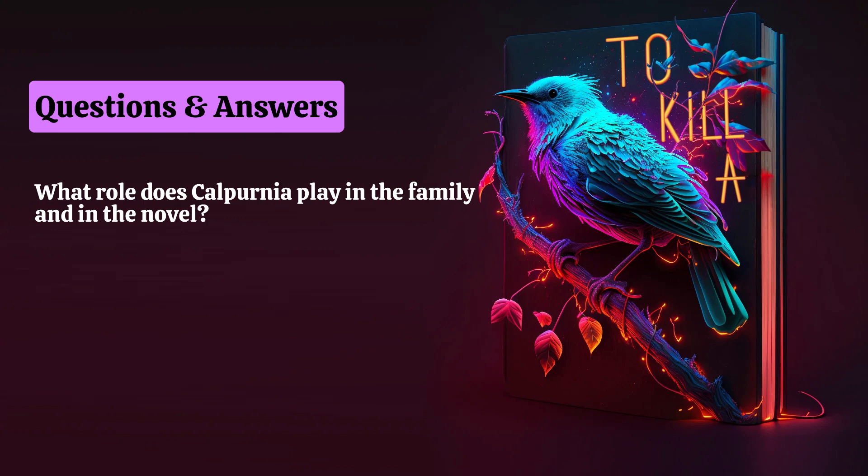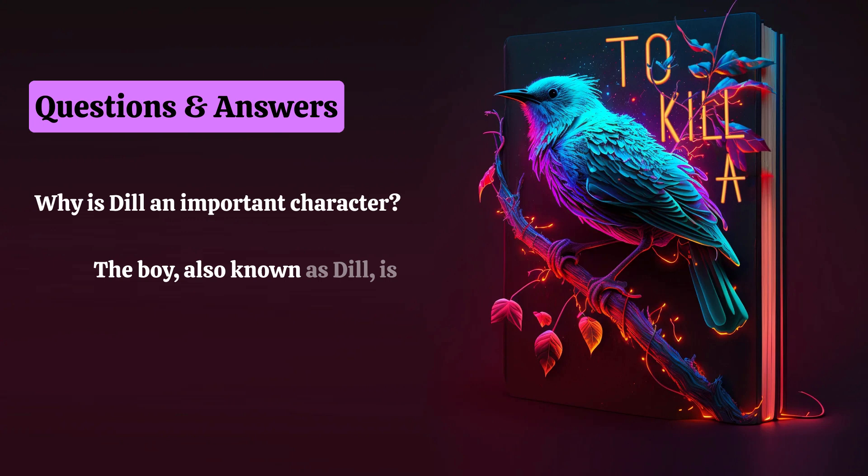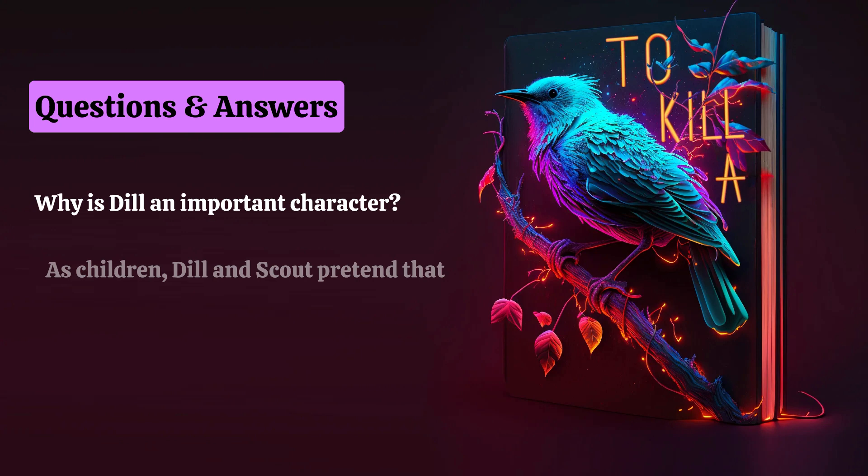Why is Dill an important character? Charles Baker Harris, the boy also known as Dill, is an important foil to Jem and Scout. His imagination kindles theirs, and his youthful enthusiasm contrasts with Jem's budding serious maturity. As children, Dill and Scout pretend that they are engaged to be married.